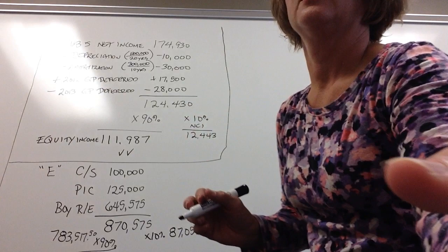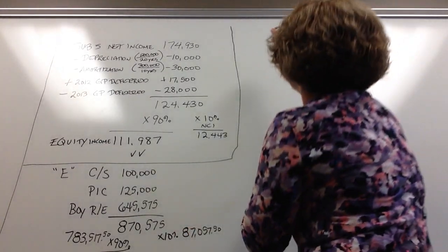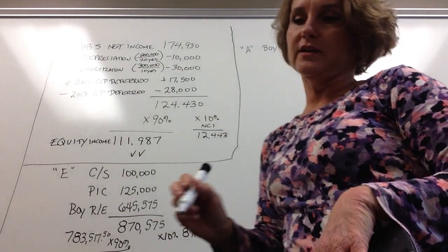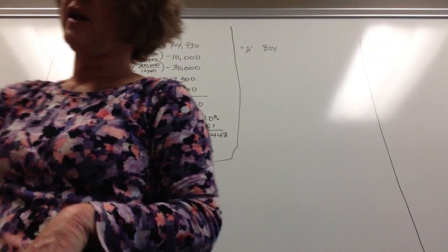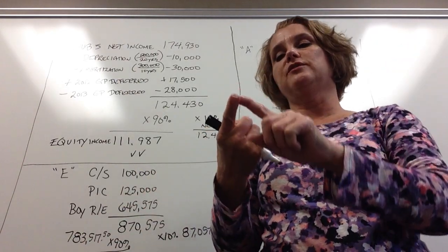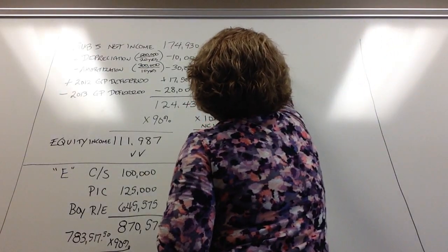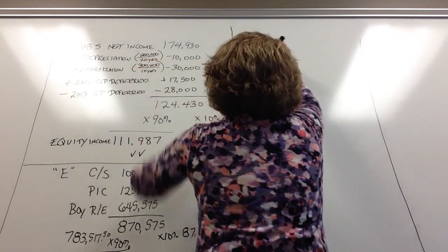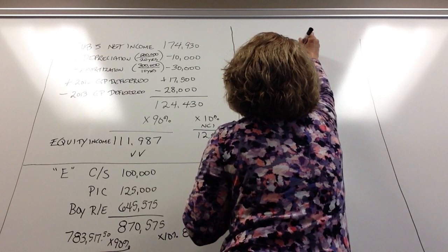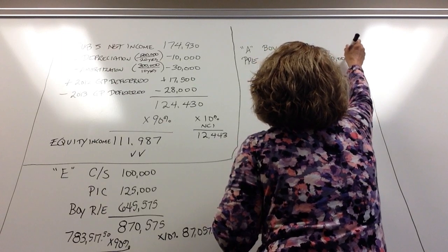For the A entry, we use beginning-of-year balances. The consolidation happened in 2010 and we're in 2013, so there have been three years of depreciation — 2010, 2011, and 2012. Property, plant, and equipment started at $200,000; we take off $30,000 for three years, bringing it down to $170,000.